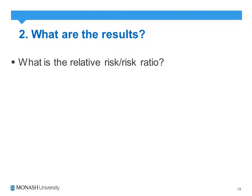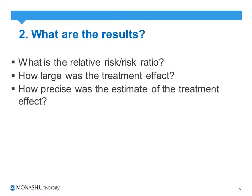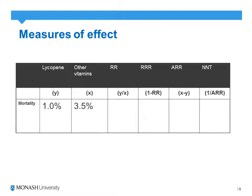The second set of questions revolves around the results themselves. For studies around therapy and randomised control trials, we usually look at relative risk or risk ratio. The key questions are: what is the relative risk; how large was the treatment effect — using relative risk reduction or number needed to treat; and how precise was the estimate of the treatment effect, i.e. what were the confidence intervals? We can also use absolute risk reduction or number needed to treat as variations.